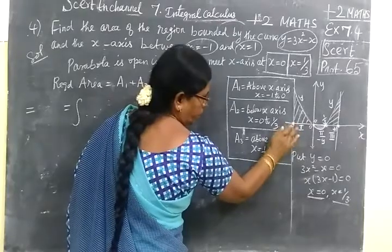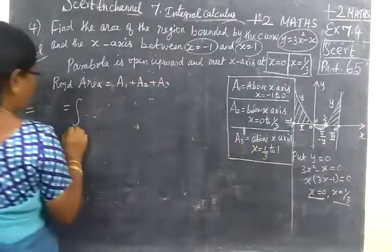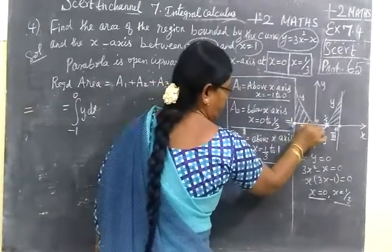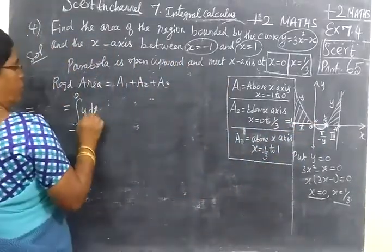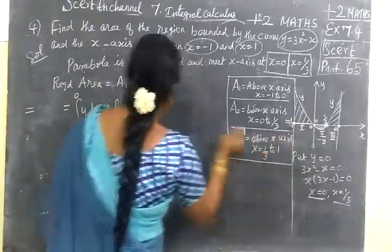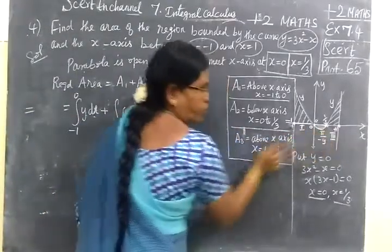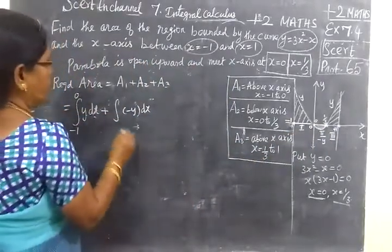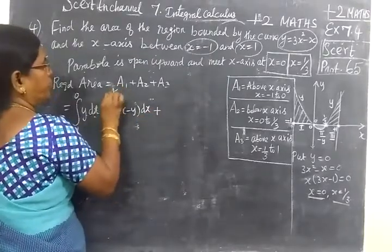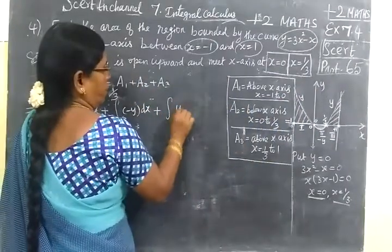From minus 1 to 0, we integrate y dx. The x-axis is the base so we use y dx. So A1 = integral from minus 1 to 0 of y dx, plus A2. A2 is below the curve, so we take minus y dx.